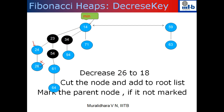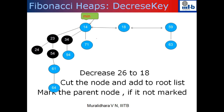Now let's say I want to decrease 26 to 18. If I change 26 to 18, there is a violation of the heap property because 24 is the parent and has a bigger value. In that case, this 18 will be cut and added to the root list — since you have a pointer to the minimum and this is a circular list. After cutting, I go check the parent: if the parent node is not marked, I mark it and stop. So 18 has been added to the root list and 24 has been marked. A marked node indicates that one of its children has been cut at some point.